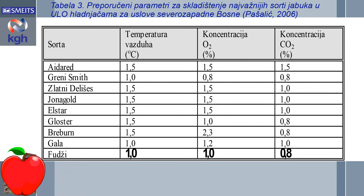U ovoj tabeli date su preporučene vrednosti parametara za skladištenje najvažnijih sorti u ULO hladnjačama. Autor navodi podatke iz severozapadne Bosne. Preporučene vrednosti za temperaturu su ujednačene i kreću se, uglavnom imaju vrednost 1, odnosno 1,5 stepeni Celzijusa za sve sorte jabuke. Ovo se dosta razlikuje i od naše uobičajene prakse i od francuskih podataka koji su malo pre navedeni.